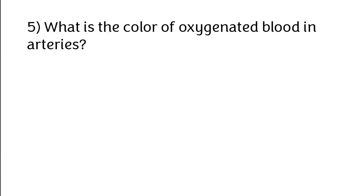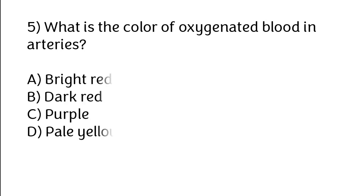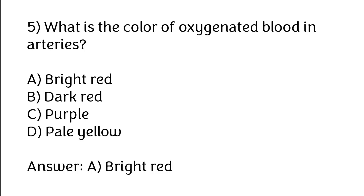What is the color of oxygenated blood in arteries? Options: Bright red, dark red, purple, pale yellow. The correct answer is Option A: Bright red.